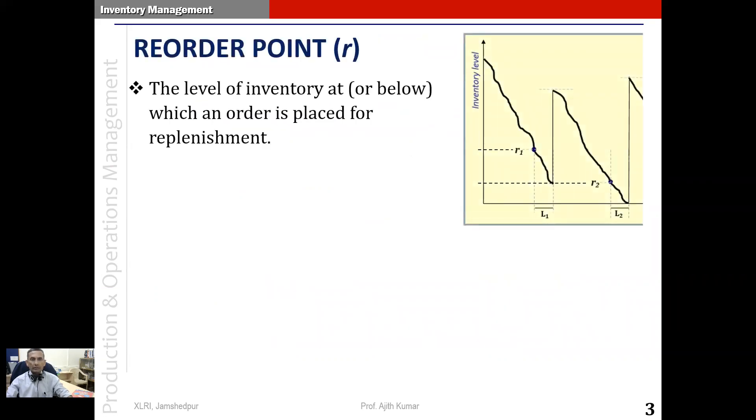What is the reorder point? The reorder point is defined as the level of inventory at or below which an order is placed for replenishment. You can see in the graph here, the inventory level is coming down. We no longer assume that the demand is happening at a constant rate. You can see the demand rate fluctuating here. It reaches a minimum point which need not be zero.